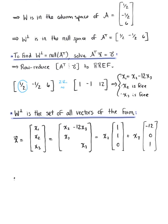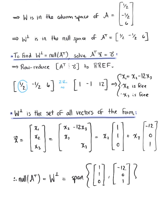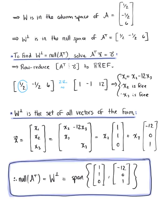From here we can make the final conclusion that the null space of A transpose, which we know is equal to the orthogonal complement of subspace W, is equal to the span of the two vectors: 1, 1, 0, and negative 12, 0, 1. So this is our final answer for the orthogonal complement of subspace W, which also forms a basis for this orthogonal complement, making this our beautiful final answer.